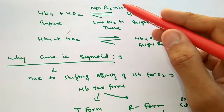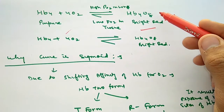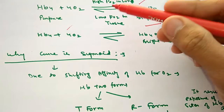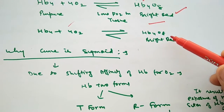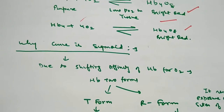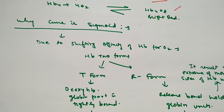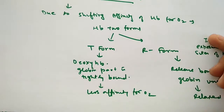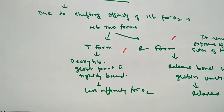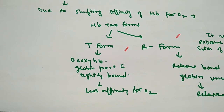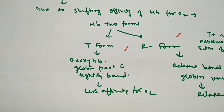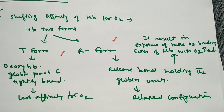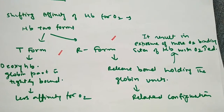Before oxygenation, hemoglobin is purple in color; by combining with oxygen it becomes bright red. Oxygenation occurs by increasing the partial pressure of oxygen in the lungs and alveoli; with lower pressure, the reaction reverses. Hemoglobin can combine with four oxygen molecules. The sigmoid shape is due to the shifting affinity of hemoglobin for oxygen. Hemoglobin has two forms of globin: the T form (tense/deoxyhemoglobin), where the globin protein is tightly bound and has less affinity for oxygen, and the R (relaxed) form, which has a loose-holding hemoglobin unit and greater oxygen affinity.